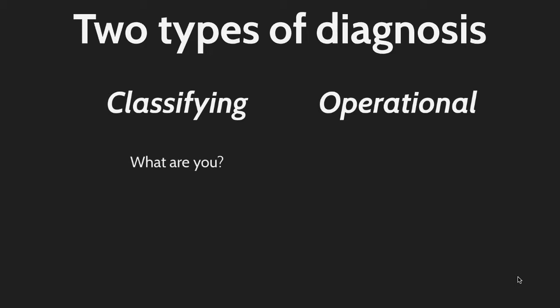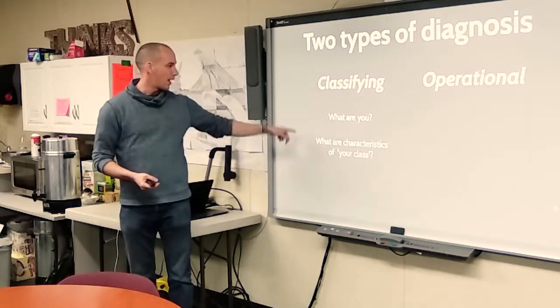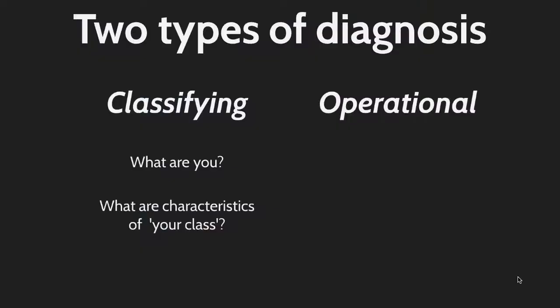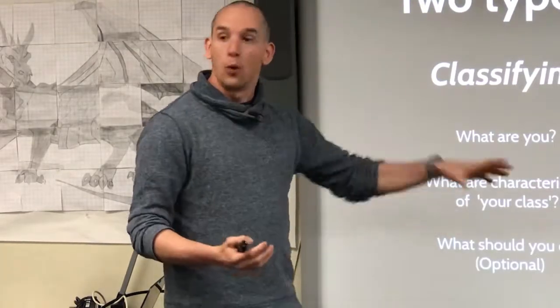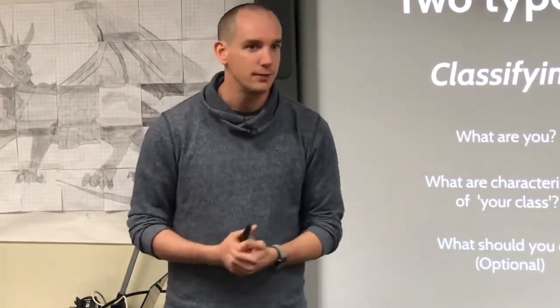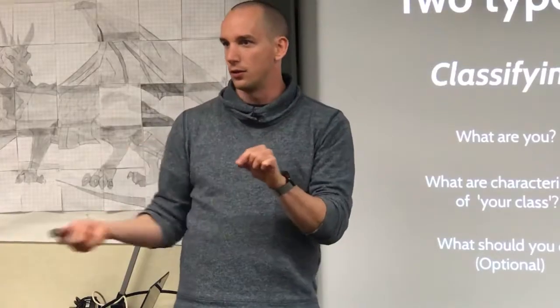Classifying diagnosis is about asking the question: what are you, and what are the characteristics of your class? Are you gifted? Are you an artist, or somebody with an autism spectrum disorder? And then, what should you do with your class? If you are somebody with ADD, this is what we do with people with ADD. So there's always a step in between — first I need to know what you are before I know what I can do with you.